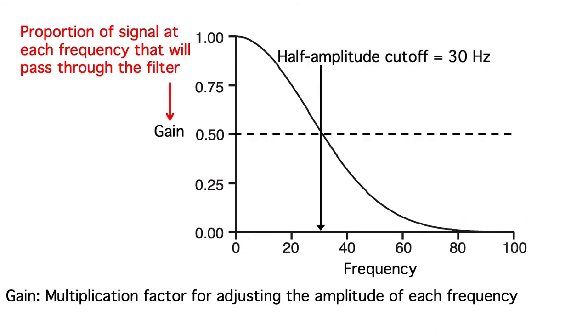Filters are often summarized by the frequency at which the signal is attenuated by 50%. This filter hits the 50% point at 30Hz, so we'd say that it has a half amplitude cutoff at 30Hz. We can also quantify the roll-off of the filter, which is how rapidly the filter drops off. We usually do this by giving the slope at the steepest part of the filter. This filter has a slope of 12 dB per octave.